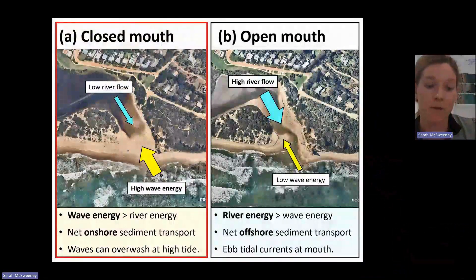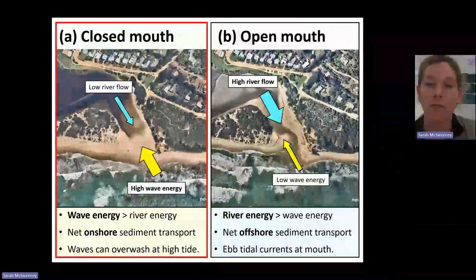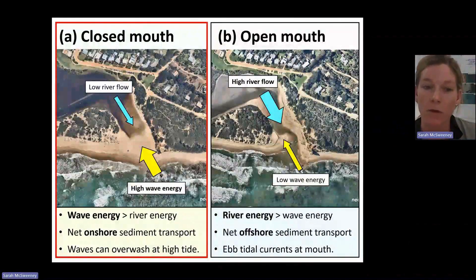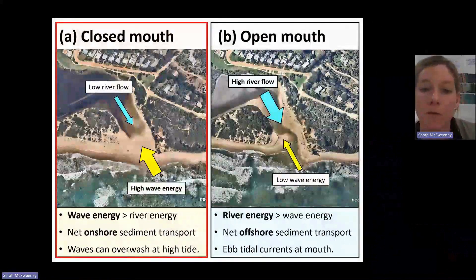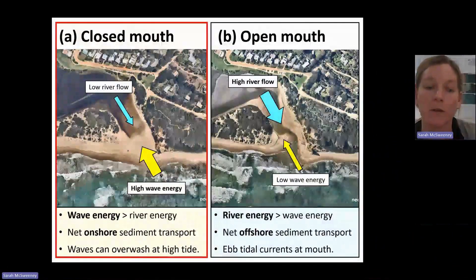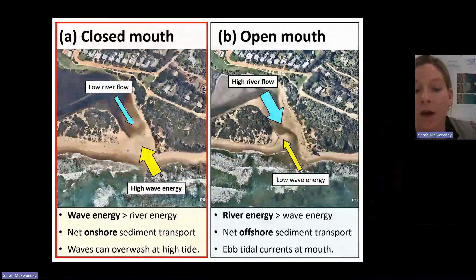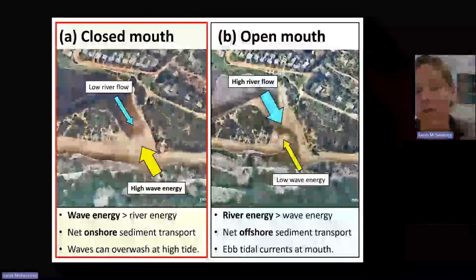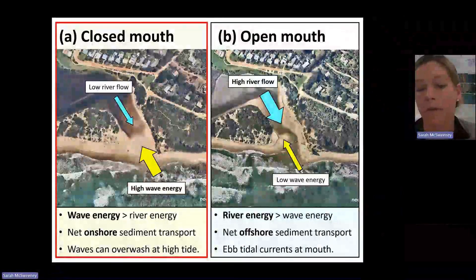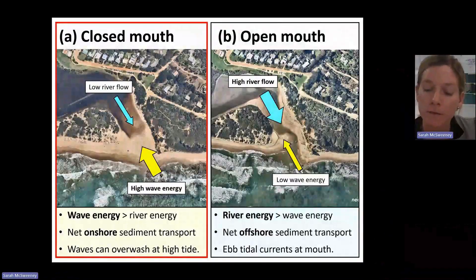In the closed state, we can see waves overwash the berm. That delivers not just a bit of salt water to the lower part of the estuary, but also sediment, which can keep building the berm into the lagoon. This usually happens at high tides and is more common during spring or bigger high tides.